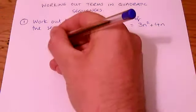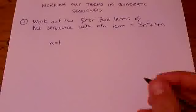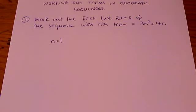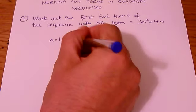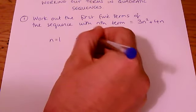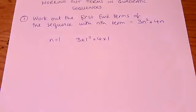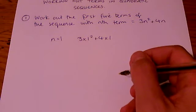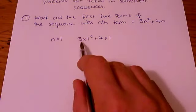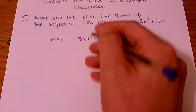So let's start with what happens when n equals 1. Well, when n equals 1, we get 3 times 1 squared plus 4 times 1. So let's work that out. Well, we must do the squaring first. 1 squared is 1.